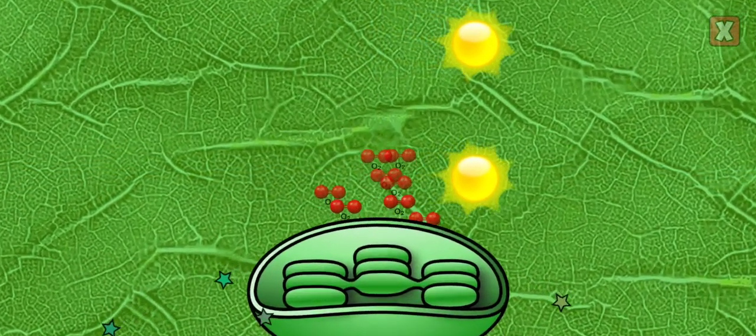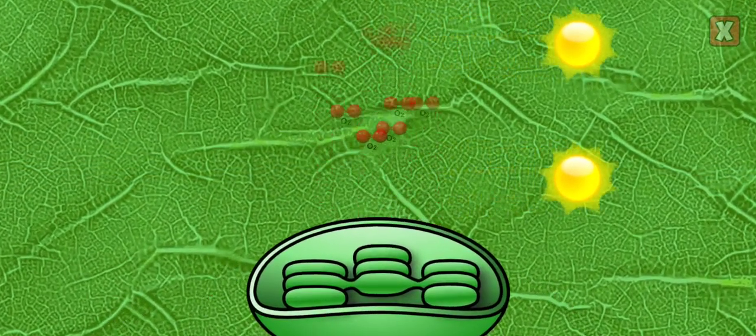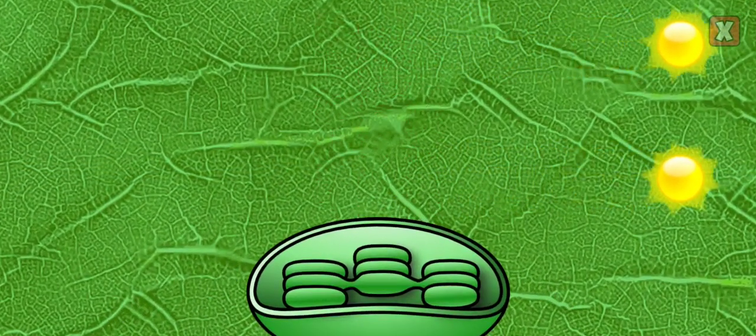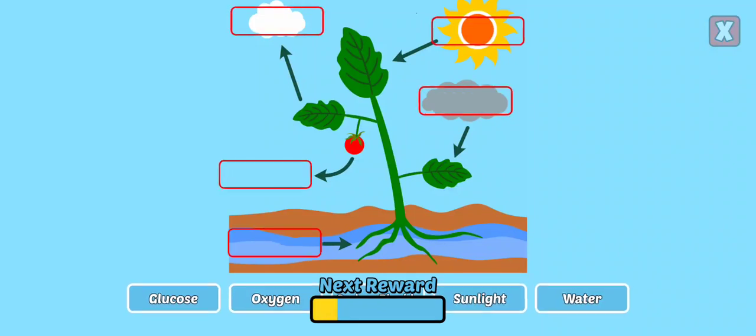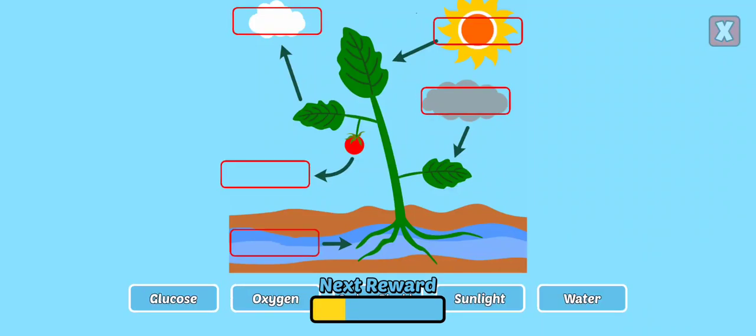Nice! You started photosynthesis, and the plant can grow. Drag the labels to complete the process of photosynthesis.